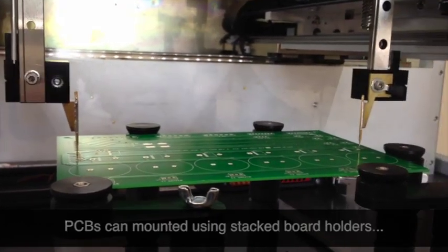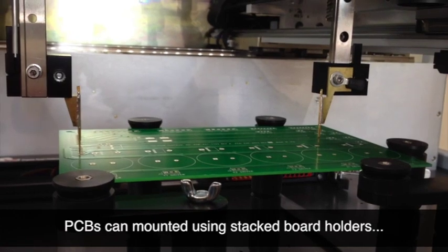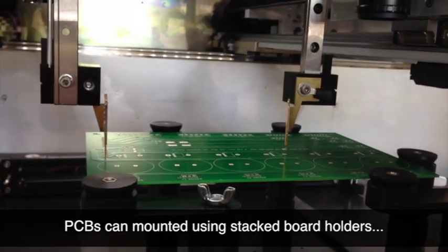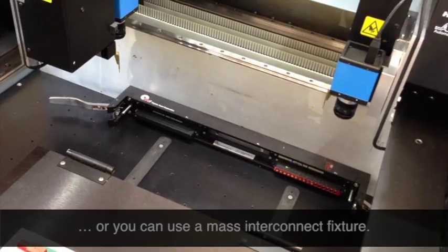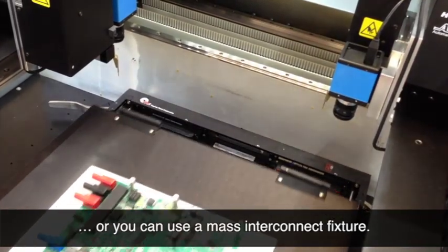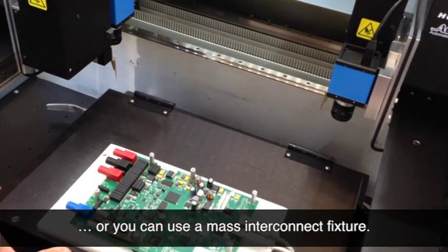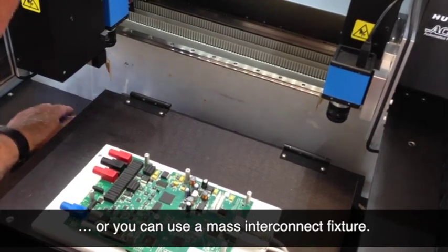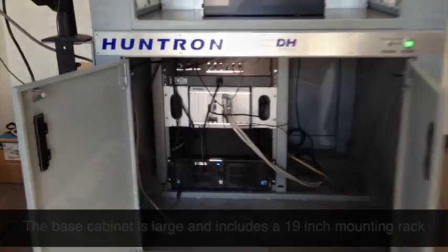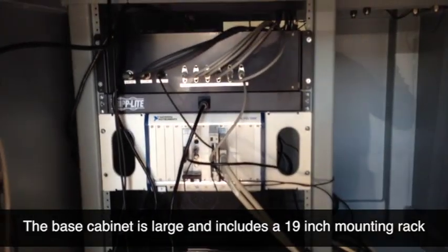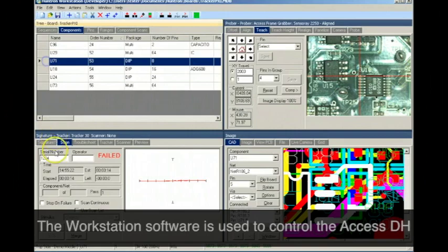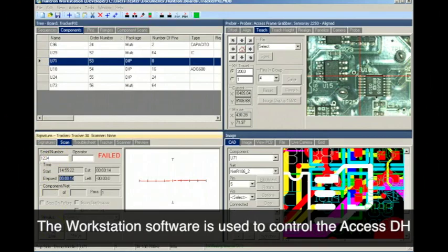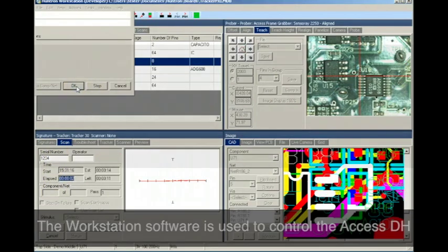It provides an open platform for a wide range of circuit card mounting options. It comes standard with stacking, interchangeable board holders, or it can be configured to work with a mass interconnect to a PCB test fixture. There is plenty of space for external test equipment in the cabinet below which includes a 19-inch mounting rack. Control of the AXS DH is primarily accomplished using the Huntron Workstation software.